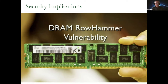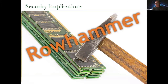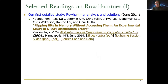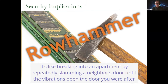This is known as the Rowhammer vulnerability. A hacker on Twitter described it as: breaking into an apartment by repeatedly slamming a neighbor's door until the vibrations open the door you were after. Initially the manufacturers were not interested in talking about this problem. Later they started calling it the noisy neighbor problem, which is also interesting.